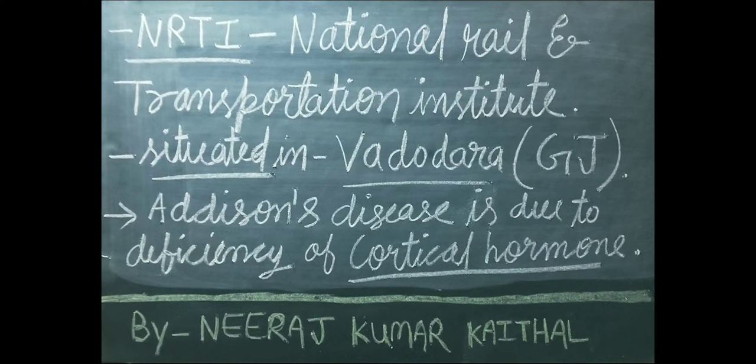NRTI ka full form hai National Rail and Transportation Institute. Yeh Vadodara, Gujarat mein sthit hai. Addison's disease is due to deficiency of cortical hormone. Hamare sharir mein cortisol ki kami se Addison's disease ho sakta hai.